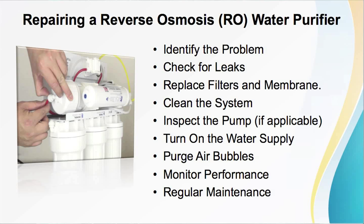Next step is also to clean the system. If you notice unusual taste or odors, clean the RO system. To clean the RO system: prepare a mixture of warm water and vinegar. Disconnect the tubing leading to the RO membrane housing. Pour the vinegar solution into the tube and let it soak for 15 to 30 minutes. Then reconnect the tubing and flush the system with clean water to remove any residue.